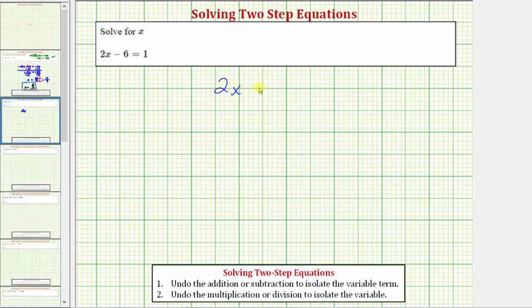We want to solve the equation 2x minus 6 equals 1. Because 2x means 2 times x, the solution to the equation is the value of x that makes 2 times x minus 6 equal to 1.